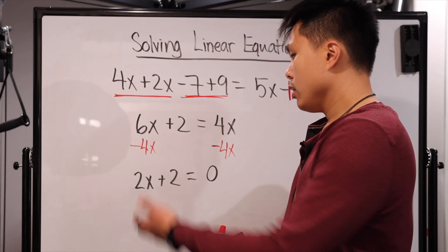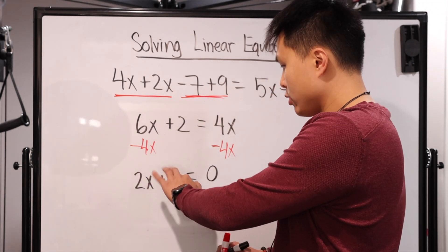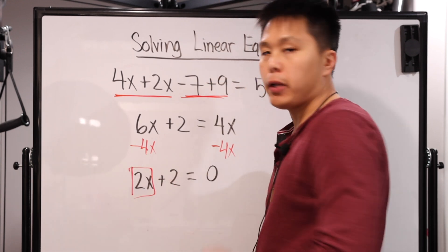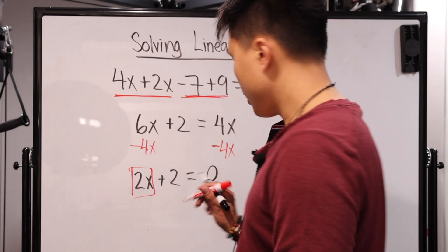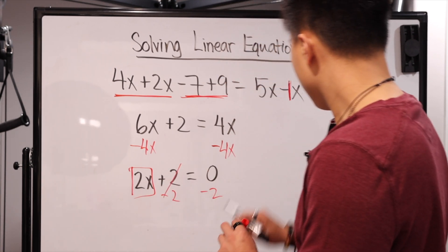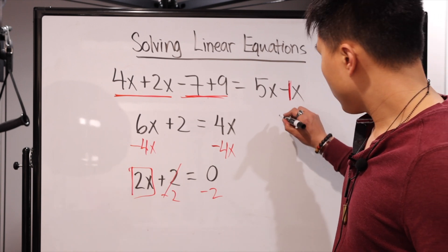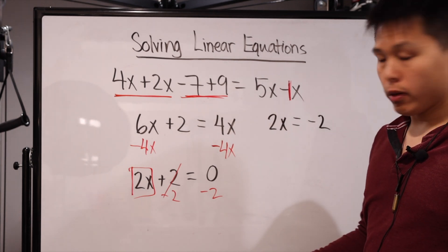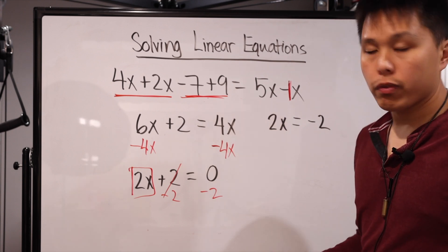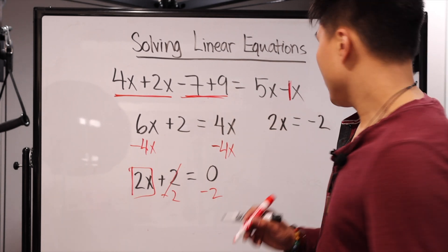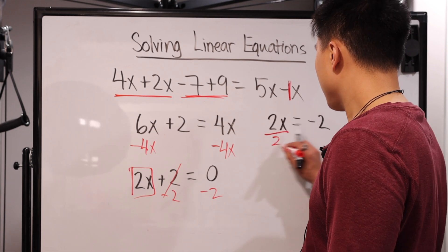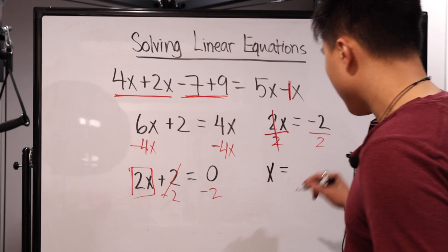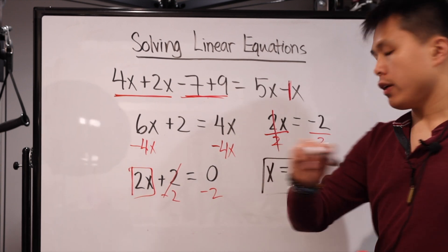We're not done yet. We still have this pesky plus 2. So we subtract 2 from both sides — this goes away — and now we have 2x equals negative 2. Adding and subtracting is not going to help us anymore, so step three: multiply or divide. Since this is multiplication, we do the opposite and divide by 2 on both sides. This goes away, and now you just have x equals negative 2 divided by 2, which is negative 1. That is your final answer for the third problem.